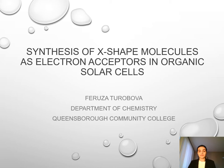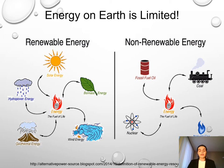Energy on the earth is limited and there are two types of energy: renewable energy and non-renewable energy. We are now using a lot of non-renewable energy. Because energy is limited, we have a pressure to find a portion of renewable energy which we can renew. Our main goal is to harvest solar energy.